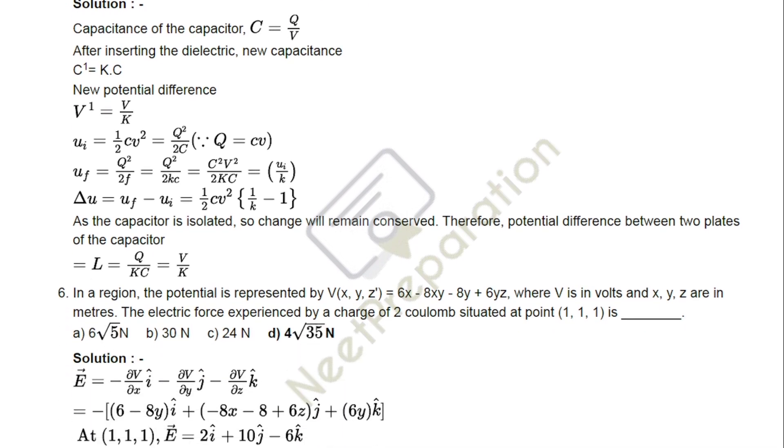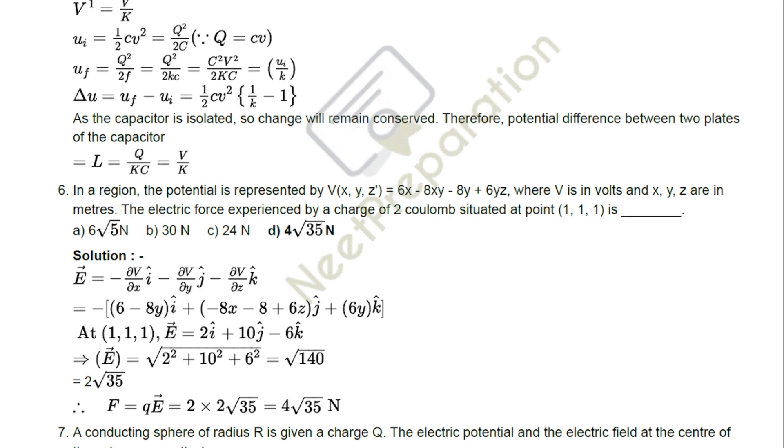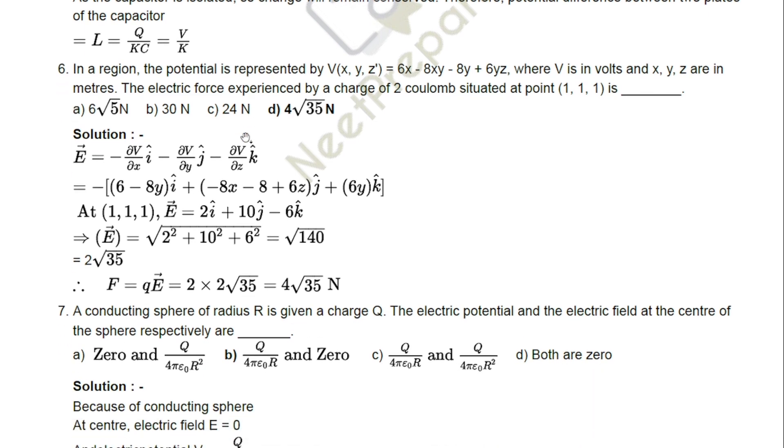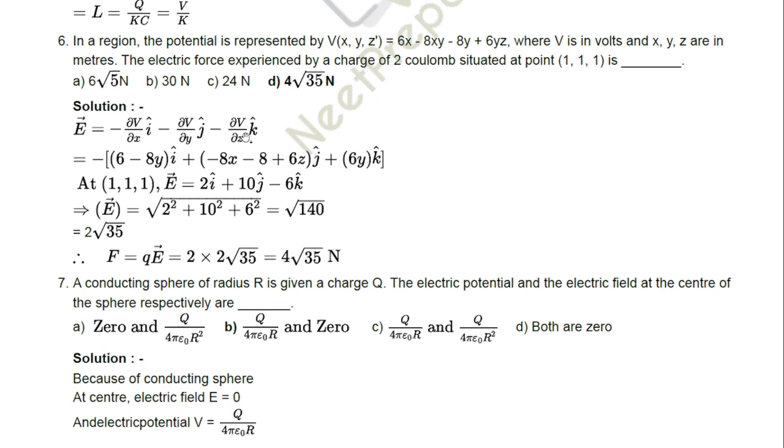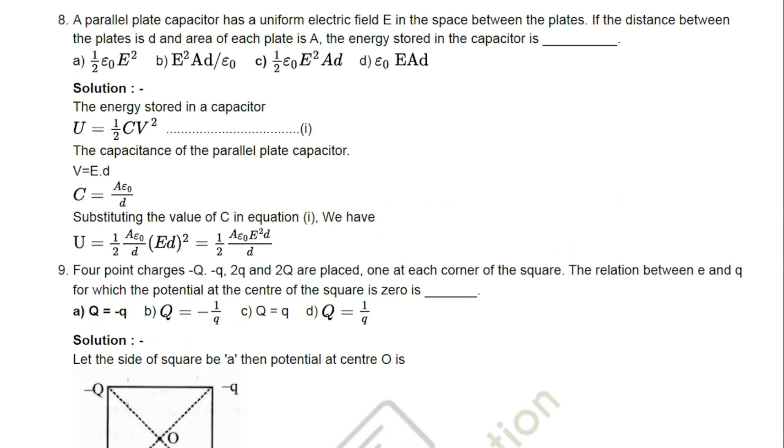Few years ago, NEET was conducted for 3 hours and 180 questions were asked. But now there are some changes in exam pattern and timing. Now 200 questions will be asked, you just answer 180 questions alone, and exam timing also increased to 3 hours 20 minutes. In NEET, totally 4 subjects are there. Each subject splits into 2 sections, Section A and Section B.